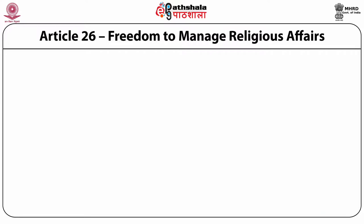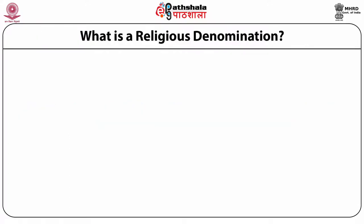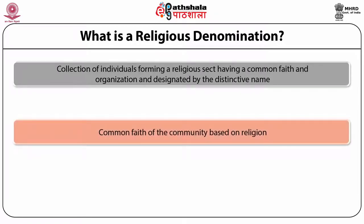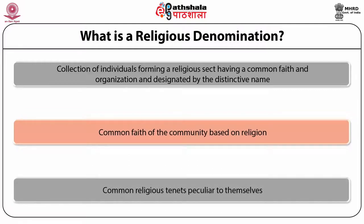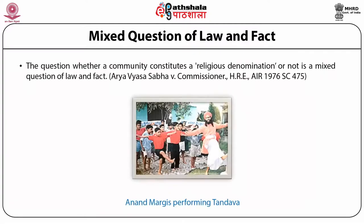It is pertinent to note that this right under Article 26 is not available to individuals as in Article 25, but to religious denominations as a group. In order for a group to qualify as a religious denomination, the Supreme Court has laid out certain conditions. According to the Supreme Court, a religious denomination is a collection of individuals forming a religious sect having a common faith and organization and designated by a distinctive name. A common religious tenet particular to themselves is also a part of a religious denomination. The question whether a community constitutes a religious denomination is a mixed question of law and fact, to be determined by having recourse to the beliefs of that particular cult or sect under the facts of the case.